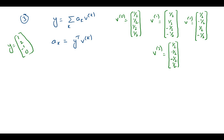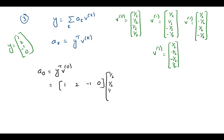The first coefficient A0 is y-transpose times V0. So y-transpose is the row vector [1, 2, -1, 0] multiplied with V0 which is (1/2, 1/2, 1/2, 1/2). That is 1×(1/2) + 2×(1/2) + (-1)×(1/2) + 0×(1/2), which equals 1/2 + 1 - 1/2 + 0 = 1. So the result is 1.